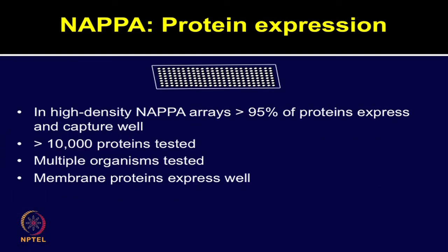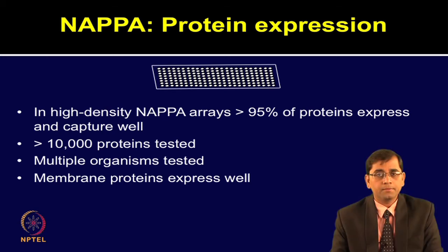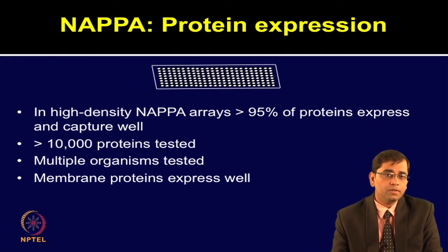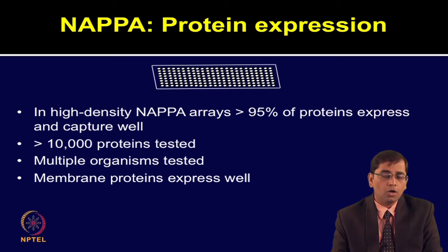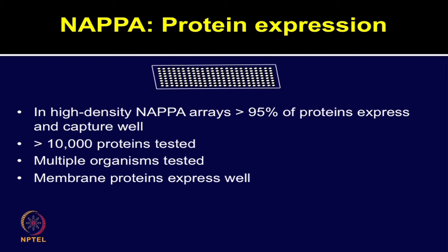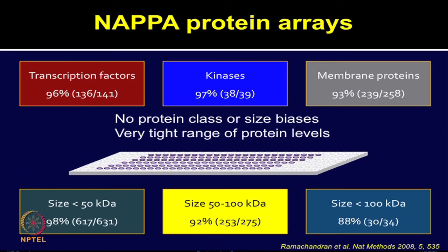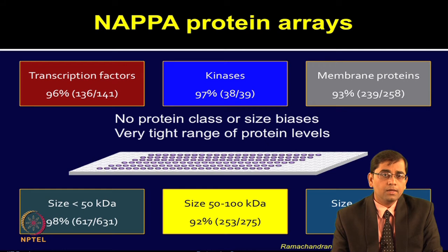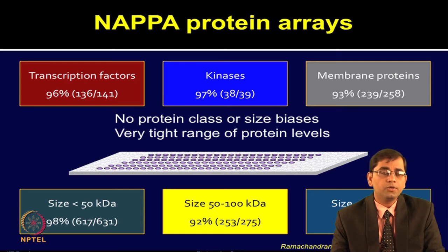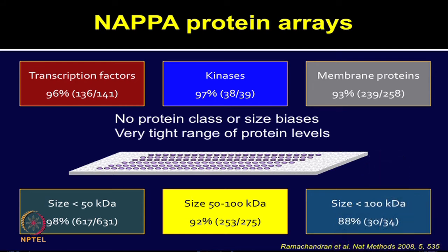NAPPA arrays are a good platform for achieving high density arrays and have successfully enabled capture of 95% of proteins. Over 13,000 human proteins have been tested on this array surface. NAPPA arrays have also been applied across various organisms because the concept is simple. Once you have access to cloned cDNA containing a GST tag or any other tag, you can make use of cDNA repositories. NAPPA does not have a bias for a specific group or class of proteins. It can also express membrane proteins, kinases, and transcription factors. There is no bias for the size of the proteins — proteins below 50 kDa, between 50 to 100 kDa, or even larger can be synthesized using NAPPA chemistry.